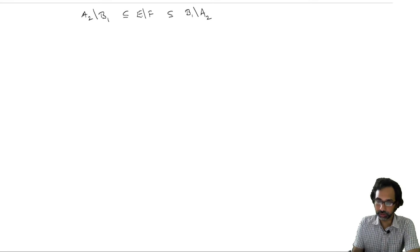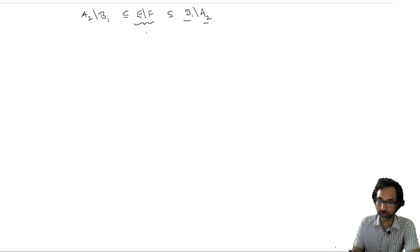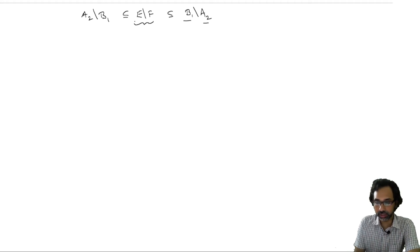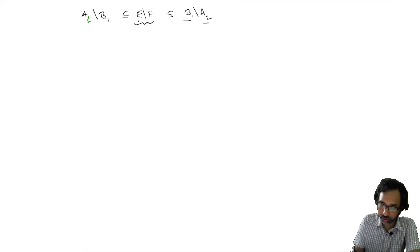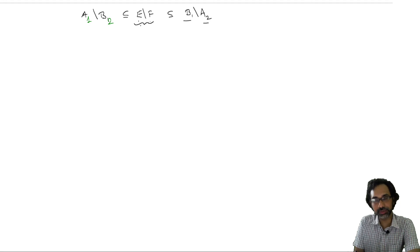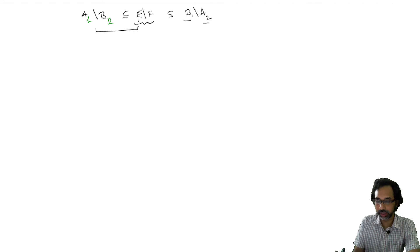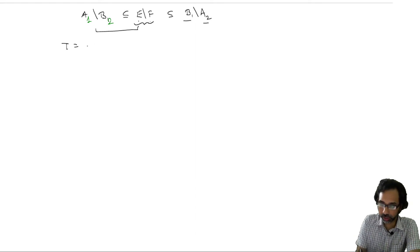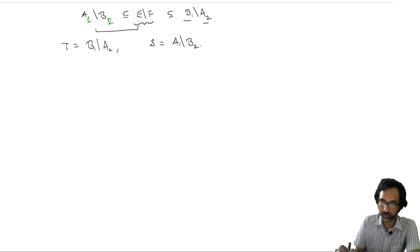We have the set inclusion E minus F ⊆ B1 minus A2, simply because E is a subset of B1 and A2 is a subset of F. Similarly, since A1 is a subset of E and F is a subset of B2, we have A1 minus B2 ⊆ E minus F. So we will take T to be B1 minus A2 and S to be A1 minus B2.